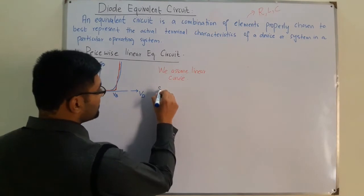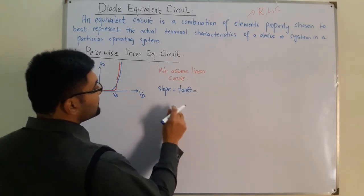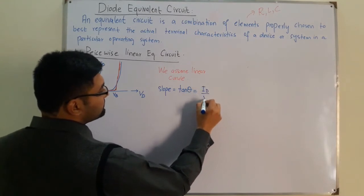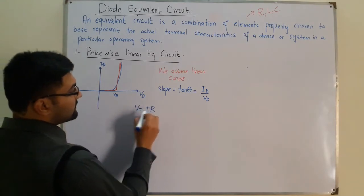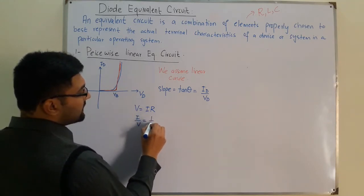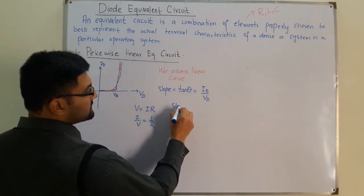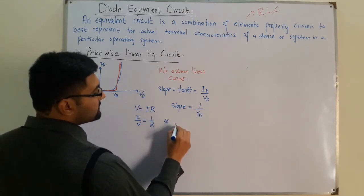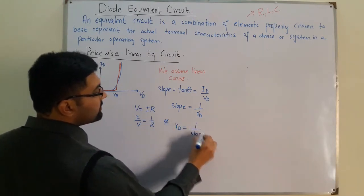The slope of the curve is tangent of theta, which equals the perpendicular over the base — that is, ID over VD. From Ohm's law, V = IR, so I/V = 1/R. This means the slope of this curve represents the diode resistance 1/RD, or equivalently, the resistance of the diode is 1 over the slope.